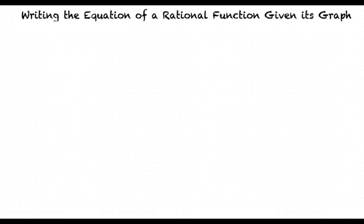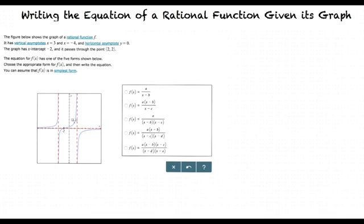Let's try an example. The figure below shows the graph of a rational function f. It has vertical asymptotes x equals 3 and x equals negative 4, and horizontal asymptote y equals 0. The graph also has an x-intercept at x equals negative 2 and it passes through the point (2, 2). The equation for f(x) has one of the five forms shown below. Choose the appropriate form for f(x) and then write the equation. You can assume f(x) is in simplest form.